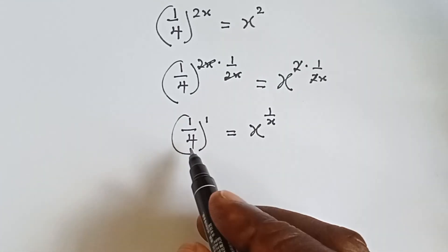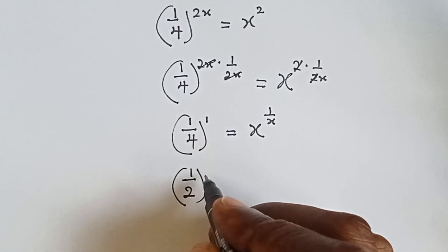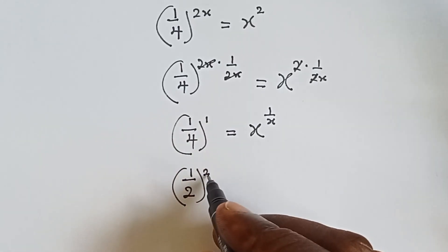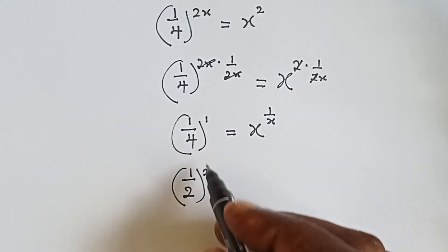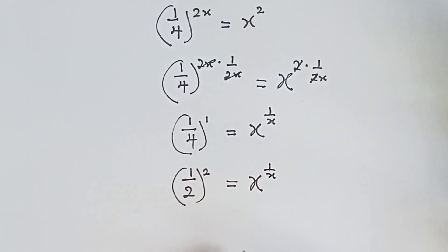Okay, so from here we can also write this as 1 over 2 raised to power 2 multiplied by that 1. We have 2, so this will also give us 1 over 4 equals to x raised to power 1 over x.